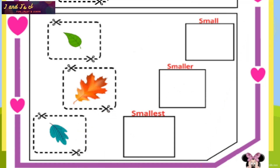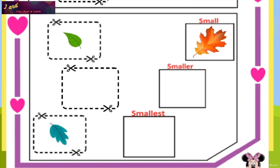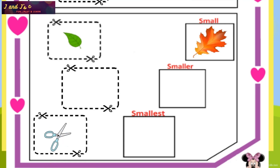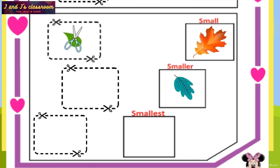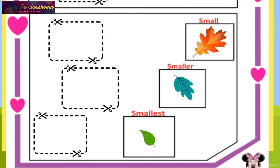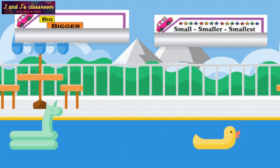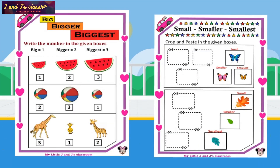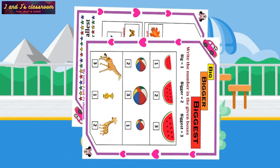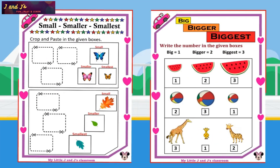Small leaf — yes, crop this leaf and paste on the first box, that is small. Smaller — crop it and paste on the second box, that is smaller. Smallest leaf — yes, crop and paste on the box. Now we have done the second worksheet also. I hope those learning moments were wonderful. Thank you so much, see you soon, bye!